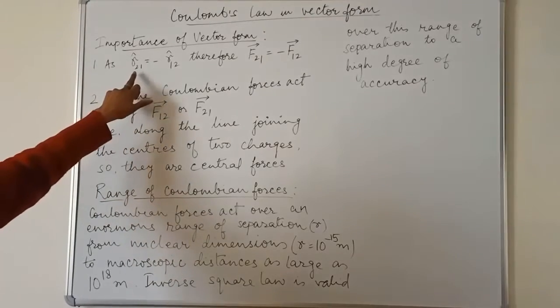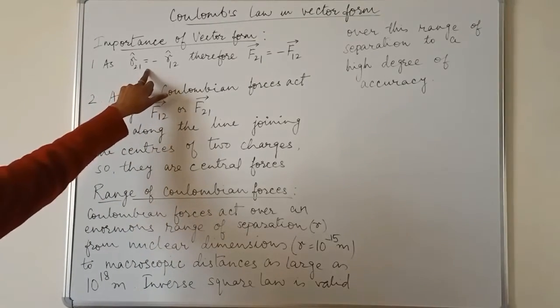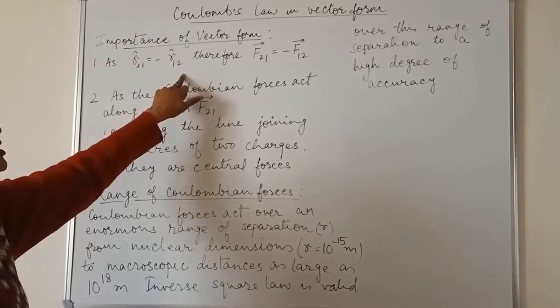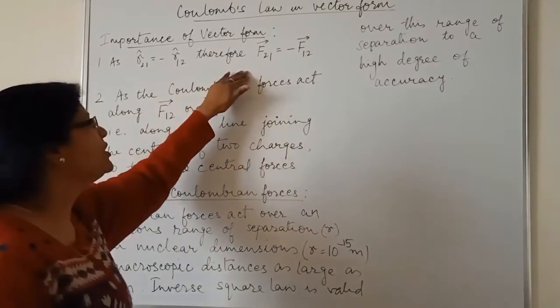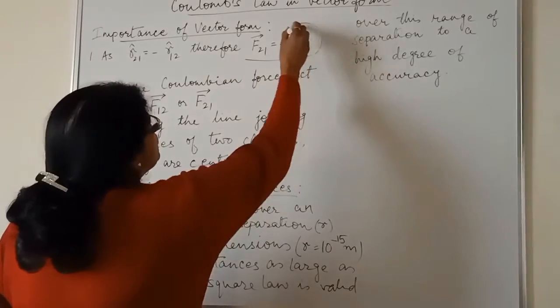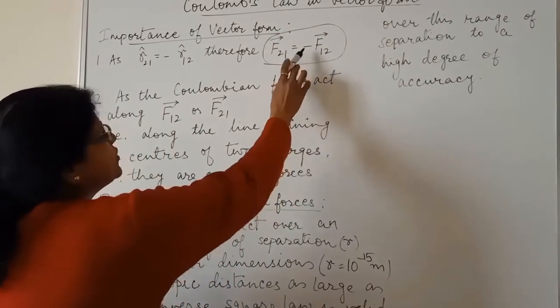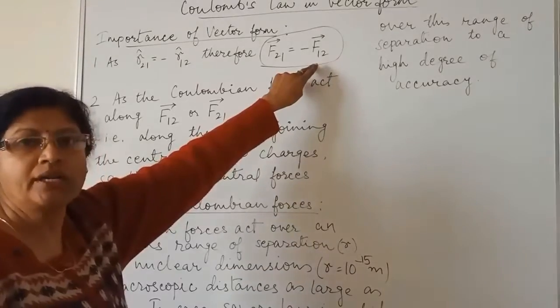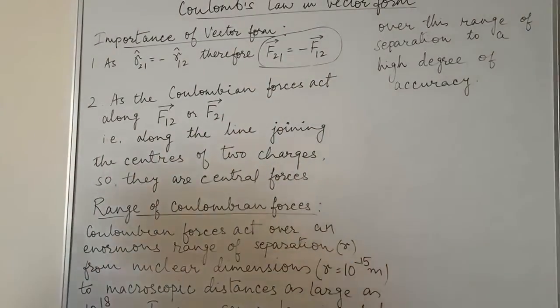Number one, as R21 is equal to minus of R12, therefore we can write F21 is equal to minus of F12. What does it mean?